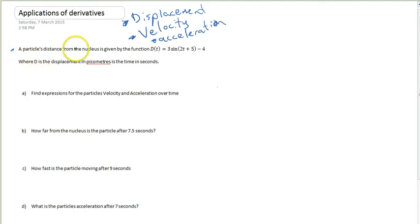A particle's distance from the nucleus is given by the function d(t) = 3sin(2t+5) - 4, where d is the displacement in picometers. Picometers are just really small units, like millimeters but much smaller. And t is the time in seconds. That just means there's a nucleus here and a particle moving around it, and its displacement is given by that function. Displacement is just distance, so its distance from the nucleus is given by this function.